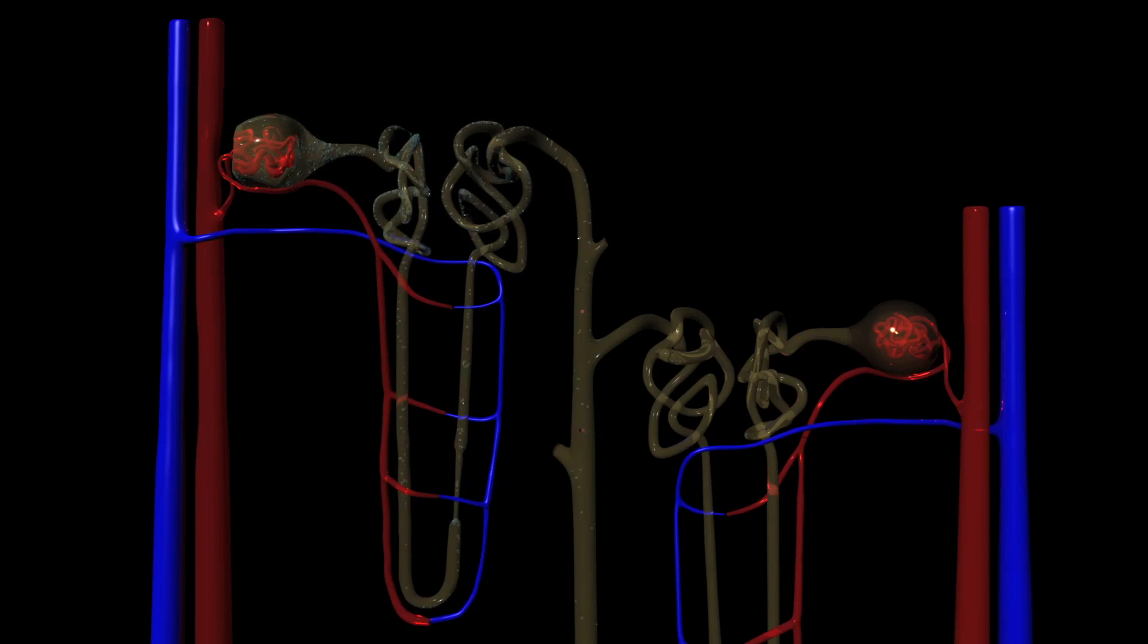Water enters the nephron from the bloodstream at the glomerulus. From there, it will either funnel all the way through the nephron to be excreted, or it will be reabsorbed back into the bloodstream. The difference between water passing through or being reabsorbed depends on where sodium goes.